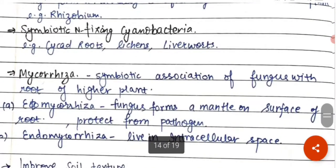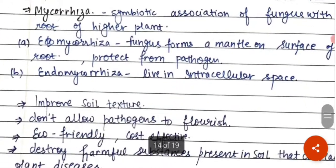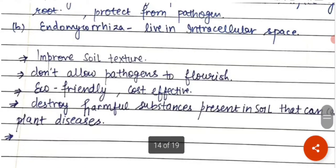Mycorrhiza jo hota hai, that is the symbiotic association of fungus with the root of the higher plant. Iske do types hain: ectomycorrhiza aur endomycorrhiza. Ectomycorrhiza ka matlab hai jo fungus bahar ki taraf hai, root ke surface ke bahar, jo usko pathogen se bacha raha hai. Endomycorrhiza jo hai, woh intracellular space mein raha hai.